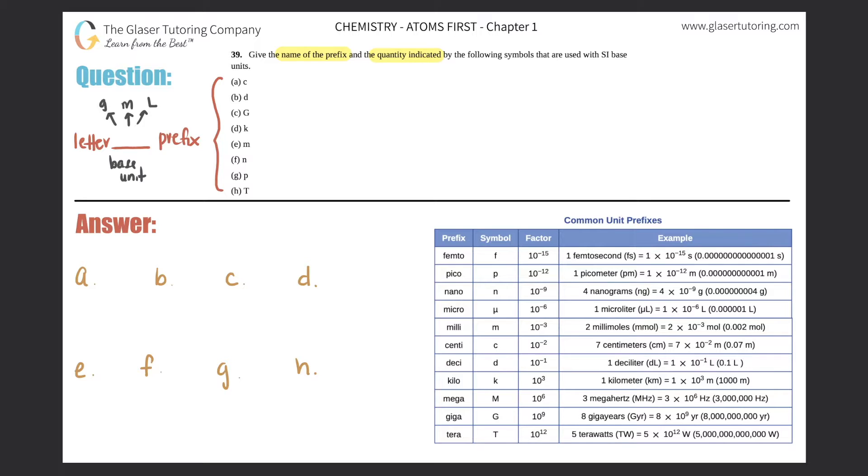For any given prefix—let's focus on kilo—you can have a kilogram, you could have a kilometer, and a kiloliter technically, because you could use all these prefixes for any single SI unit.